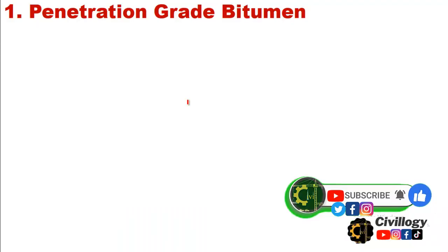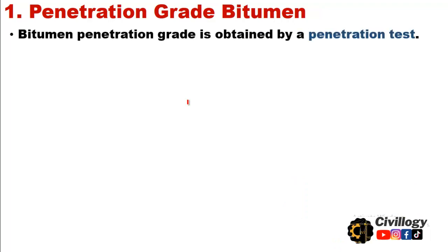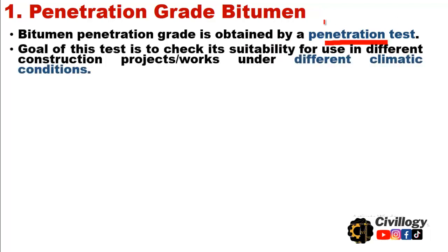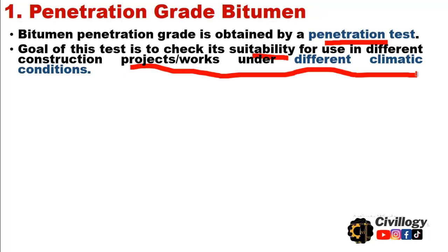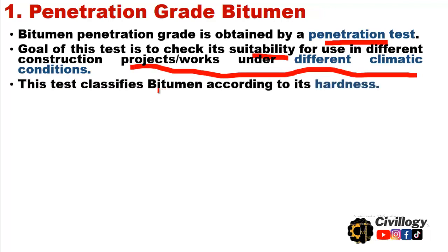The first one is penetration grade bitumen. This is one of the oldest methods of grading bitumen and is widely used worldwide. Bitumen penetration grade is obtained by the penetration test. The goal of this test is to check its suitability for use in different construction projects under different climatic conditions. This test classifies bitumen according to its hardness.